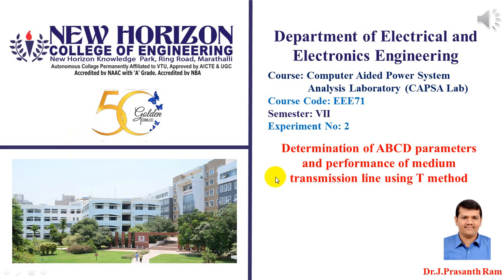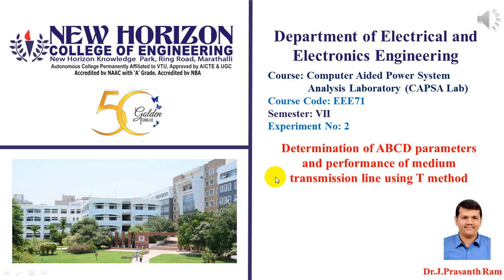In the last lecture, we have discussed much on the PI network. Here we are going to analyze the performance of a transmission line connected in a T network, where we are going to evolve the sending end current and sending end voltage using the load side data. You will be provided with simple data on the end user side or customer side or load side, and you have to estimate the ABCD parameters from your receiving end data. From ABCD parameters, we have to compute the sending end voltage and sending end current. I request all of you to brush up your formulas for the T method from your T&D classes or power system analysis classes.